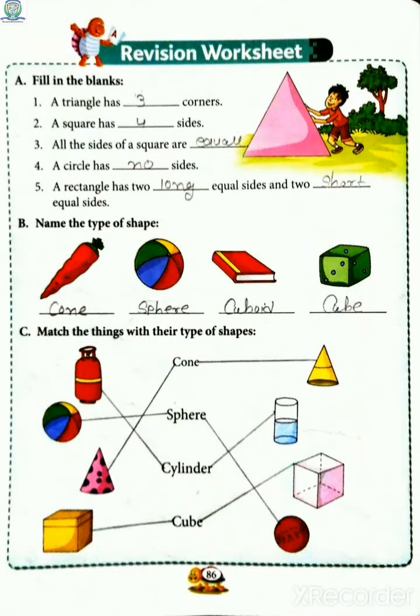Revision Worksheet, Exercise A - Fill in the Blanks. First is: A triangle has ___ corners. So triangles ke kitne corners hoote hai? Triangle ke 3 corners hoote hai. Next is: A square has ___ sides. So square has 4 sides.